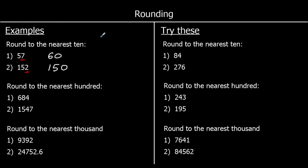Rounding to the nearest 100 — we find the hundreds column, then look at the next one down, which is going to be the tens. If it's 5 or above, it rounds up. So 684 is closer to 700 — it rounds up. 1,547 isn't going to round up — it stays as 1,500.